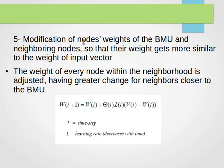After that, we modify the nodes' weights of the BMU and the neighboring nodes so that their weight gets more similar to the weight of the input vector. The weight of every node within the neighborhood is adjusted, having greater change for neighbors closer to the BMU. So the ones close to the BMU will have greater change in their weight. And that's how we change the weight: W of t plus 1 equals W of t, i.e. the weight at the previous step, plus this value here.